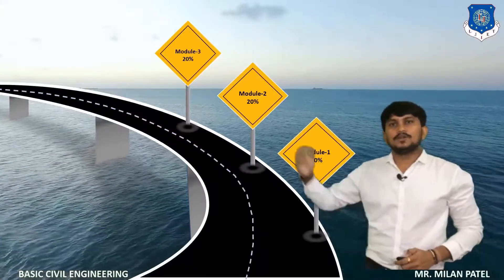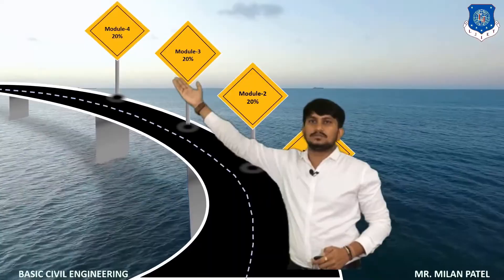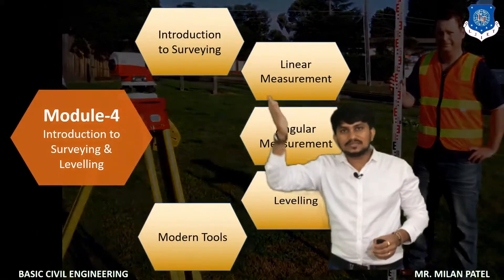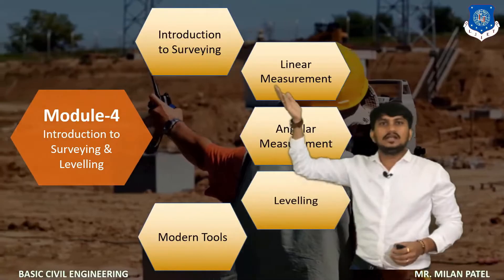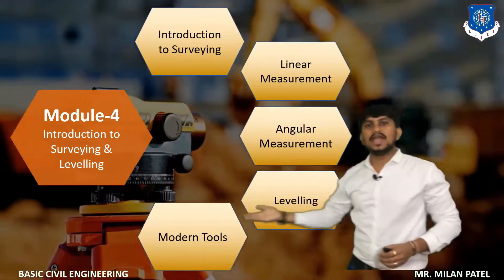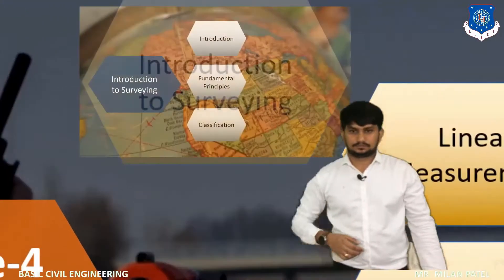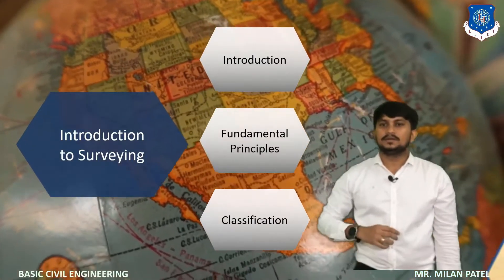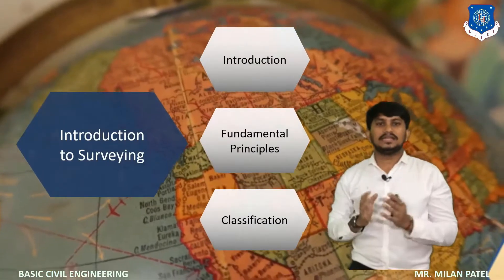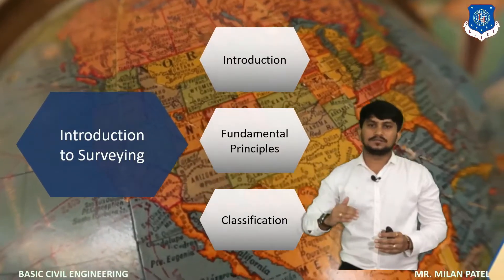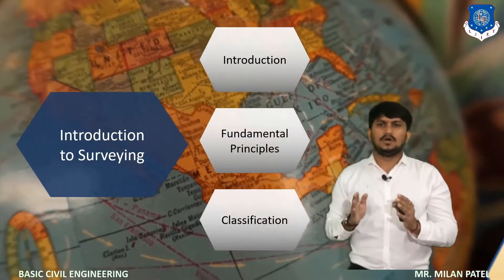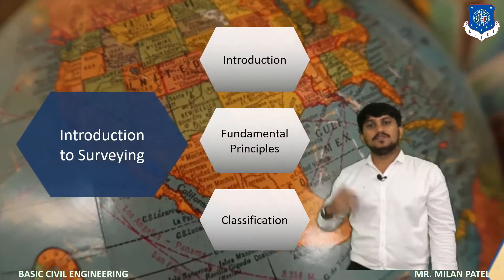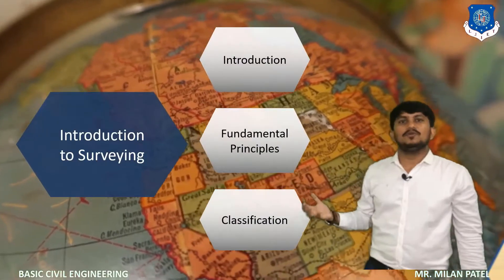Now we will go through Module 4, having a weightage of 20%. This module is mainly about introduction to surveying and levelling, divided into 5 topics: introduction to surveying, linear measurement, angular measurement, levelling, and modern surveying techniques. Surveying is an art of determining the relative position of different points on the surface of the earth — in simple words, marking points on the earth to find the area and volume of land. For that, we have to understand the fundamental principles and classification of surveying.